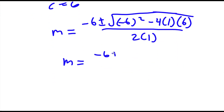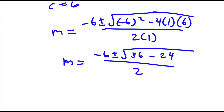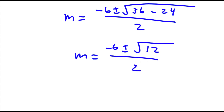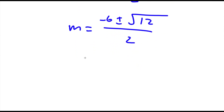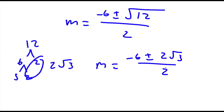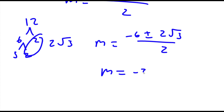So I have negative 6 plus or minus the square root of negative 6 squared — which is 36 — minus 4 times 6, which is 24, all over 2 times 1, which is 2. So m equals negative 6 plus or minus the square root of 36 minus 24, which is 12, over 2. The square root of 12 equals 2 root 3, since 12 equals 6 times 2 and 6 equals 3 times 2. So m equals negative 6 plus or minus 2 root 3, over 2. Dividing by 2 gives m equals negative 3 plus or minus the square root of 3.